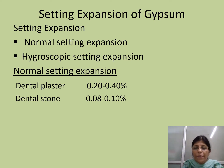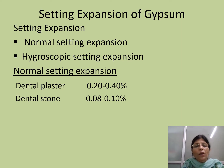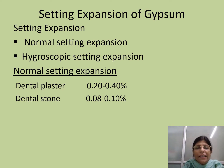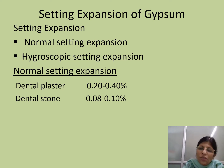Hello, good morning friends. Here we are discussing one of the important properties of gypsum products, that is setting expansion. There are two types of setting expansion which we are going to discuss: normal setting expansion and hygroscopic setting expansion. Setting expansion, as the name suggests, is the expansion which is seen after setting of the material. Normal setting expansion is the setting expansion seen after the setting of gypsum products, that is dental plaster and dental stone.